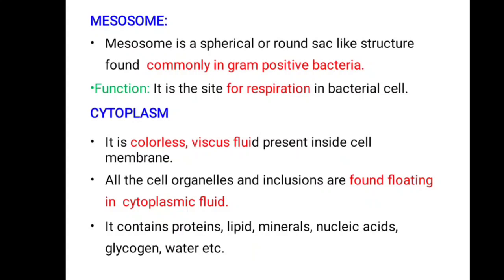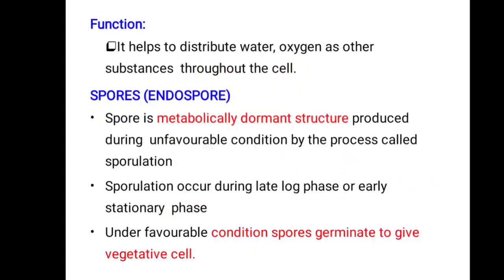Next is the cytoplasm — the colorless, viscous fluid present inside the cell membrane. All cell organelles and inclusions are found floating in the cytoplasmic fluid. It contains proteins, lipids, minerals, nucleic acids, glycogen, and other substances. The function of cytoplasm is to help distribute water, oxygen, and other substances through the cell. Next are spores or endospores. A spore is a metabolically dormant structure produced during unfavorable conditions by a process called sporulation, which occurs during the late log phase or early stationary phase. Under favorable conditions, spores germinate to give vegetative cells.